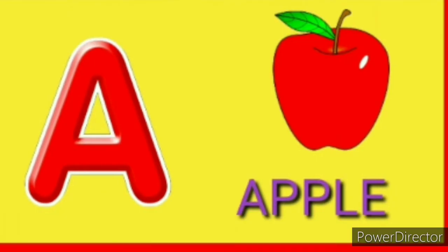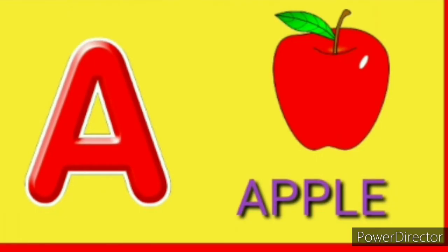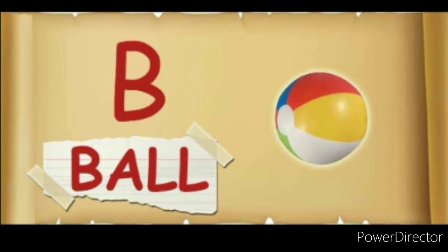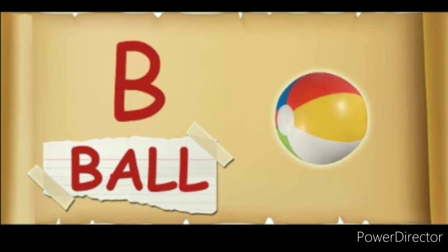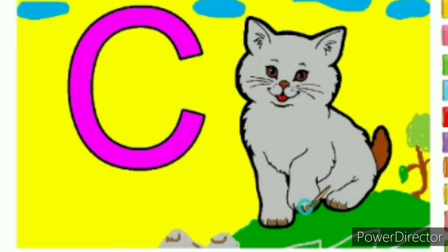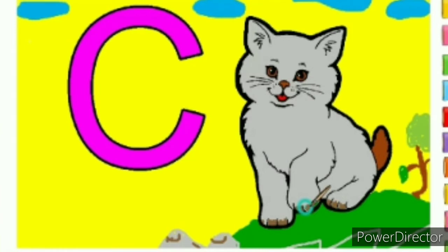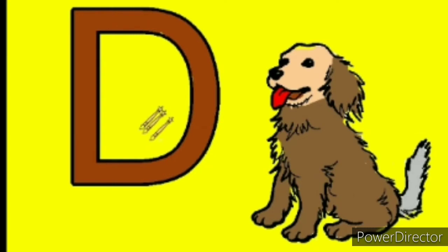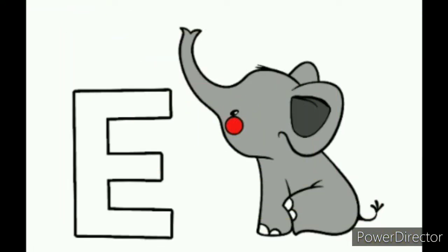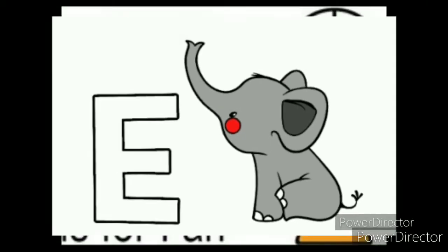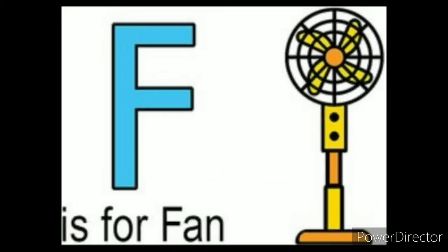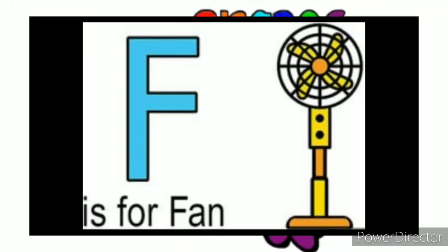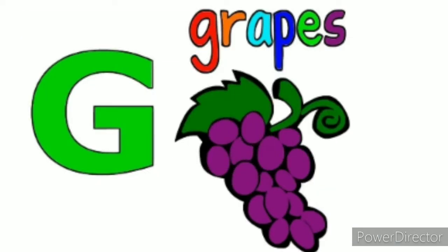H says huh. A for apple, B for ball, C for cat, D for dog, E for elephant, F for fan, G for grapes.